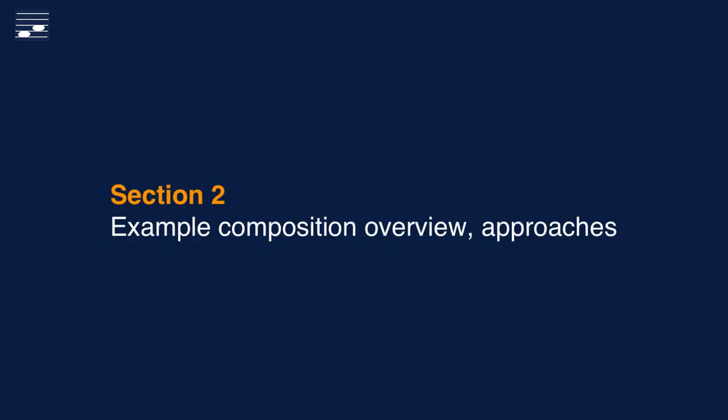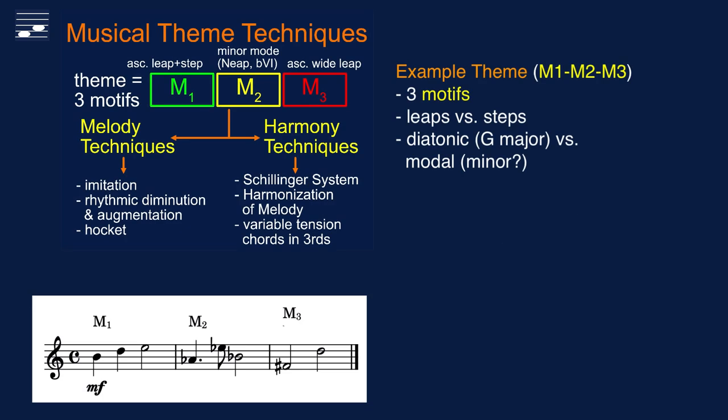Let's start with an overview of the full example composition, used throughout this tutorial and that you will hear in full at the end. The main element is a three-motif theme, shown here in diagram and staff notation. The motif's characteristics are leaps versus steps and the implied diatonic mode.